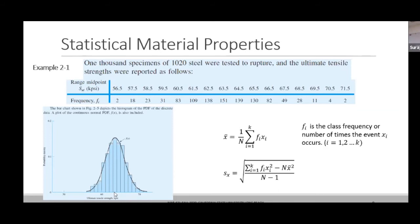If you use 57.5 kpsi as your material property for design, that material will always be safe — a highly conservative design. The downside is a very bulky, heavy component. If you use the extreme maximum value, you are very weight-optimized but have a high chance of failure. The mean gives a trade-off between both weight savings and strength optimization.